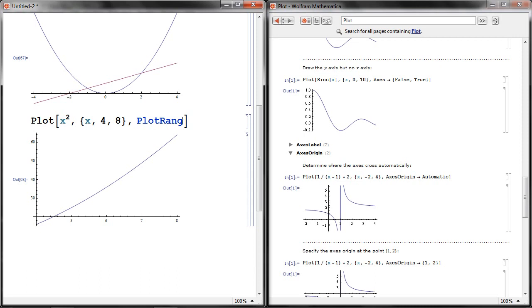So you can say comma, axes origin. Plot range is a different option, maybe I'll talk about that later. So axes origin, and if you look at this syntax here, it says axes origin, then arrow, just dash and greater than sign.